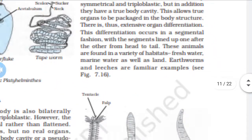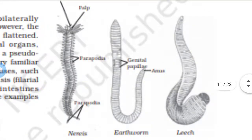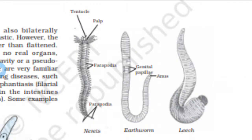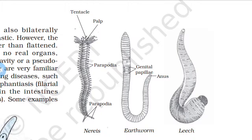Animals of Annelida are bilaterally symmetrical and triploblastic. They have a true body cavity, which allows true organs to be packaged in the body. There is extensive organ differentiation that occurs in the segmentation pattern, with segments lined one after the other.